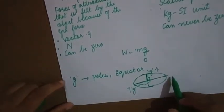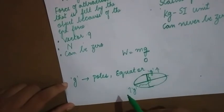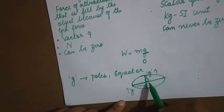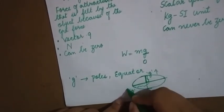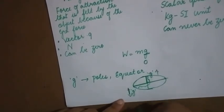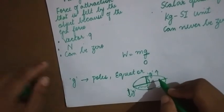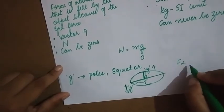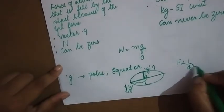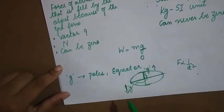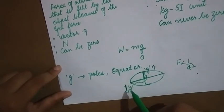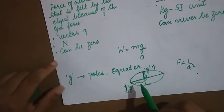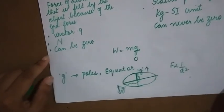Students, the acceleration due to gravity varies at the poles as well as the equator. The distance is comparatively more at the equator than at the poles. So when the distance is more, the acceleration due to gravity is less. If the distance is less, the acceleration due to gravity is more. We know that force is inversely proportional to the distance squared — more the distance, less will be the force of attraction and less will be the acceleration due to gravity. Less the distance, more will be the acceleration due to gravity. Remember this.